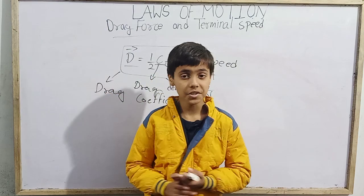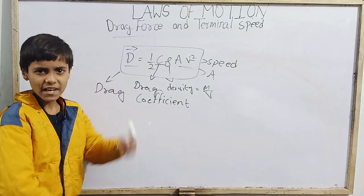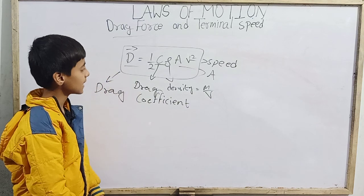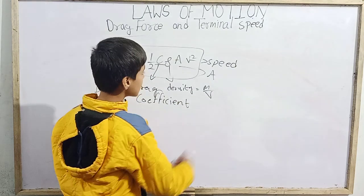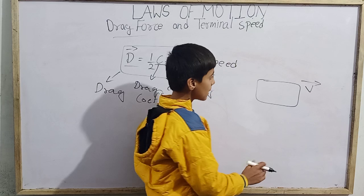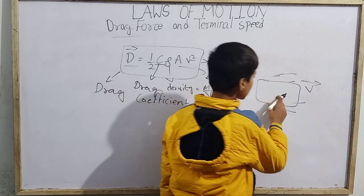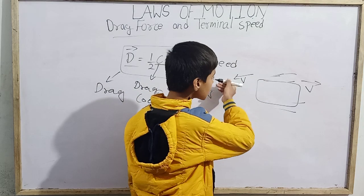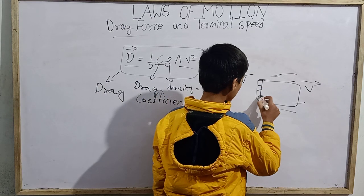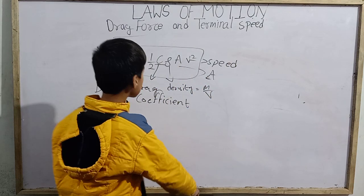The drag coefficient C is similar to static or kinetic friction coefficients — it is just a dimensionless coefficient. Its value ranges approximately from 0.4 to 1.2. Rho is the air density. A is the cross-sectional area — meaning the area perpendicular to the direction of motion, which is the area of contact between the body and the fluid.